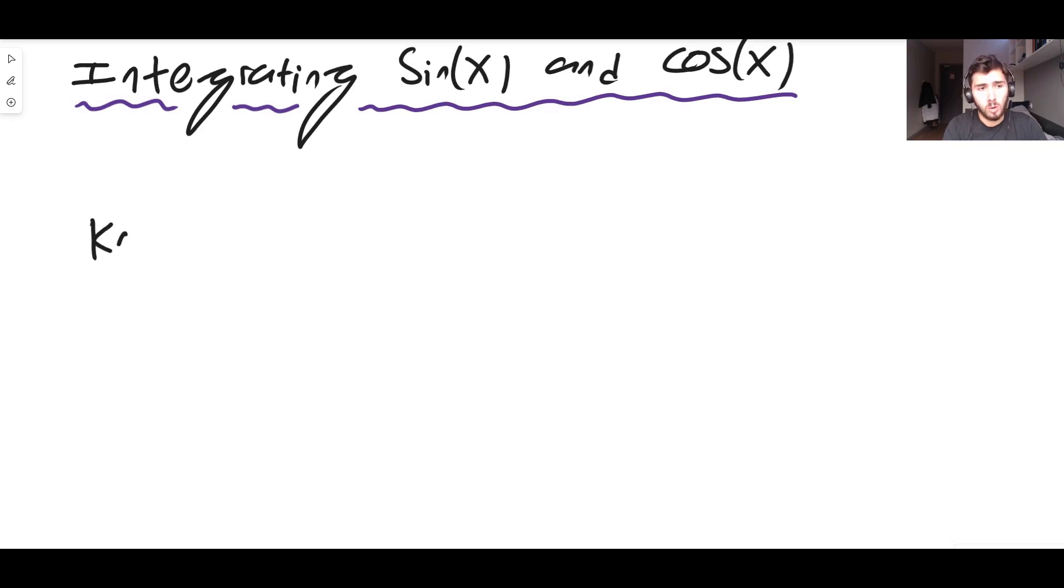So if we already know and can prove, and I have videos on proving why this is true, but if we know that if we have let's say some y equals sin x, this means that the derivative with respect to x is cos x.